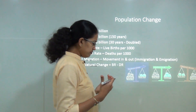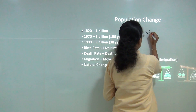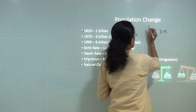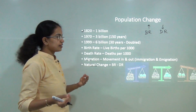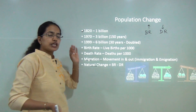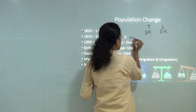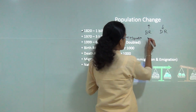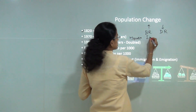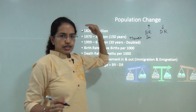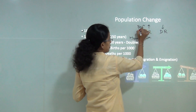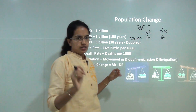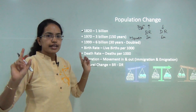What is population change? Whenever we talk about population change, there are two key terms: the increase in population due to birth rate, and the decrease due to death rate. These are the natural factors. However, there are artificial factors created by migration — movement of people from one place to another. Immigration means people moving in, which leads to increase in population, while emigration means people moving out, leading to a decrease. Both these factors affect the net change in population.